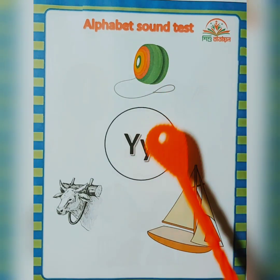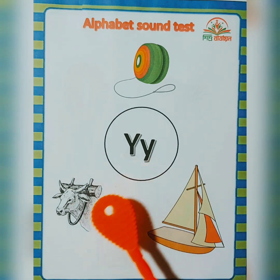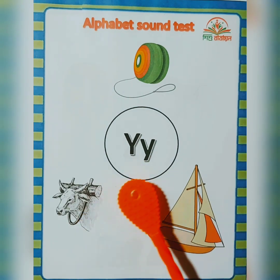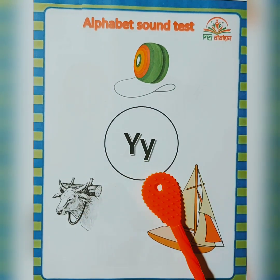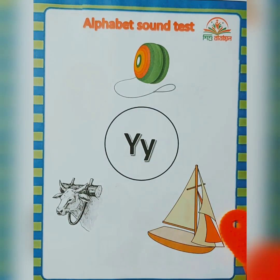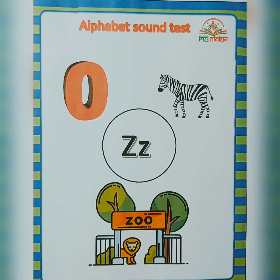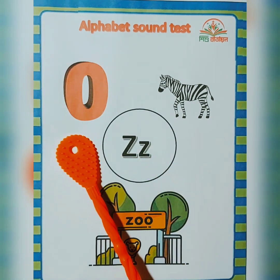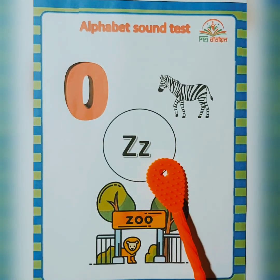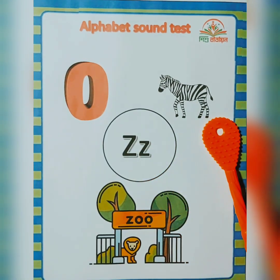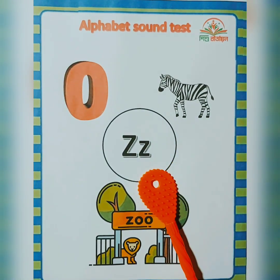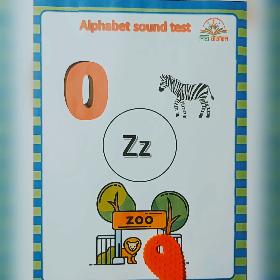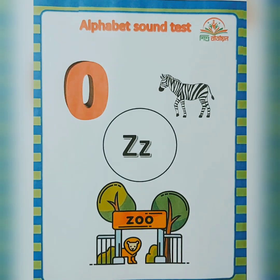Y — yak, yo-yo, yarn. Z — zebra, zero, zoo.